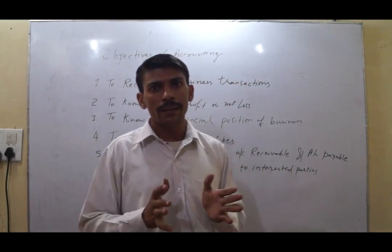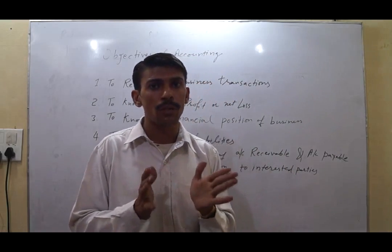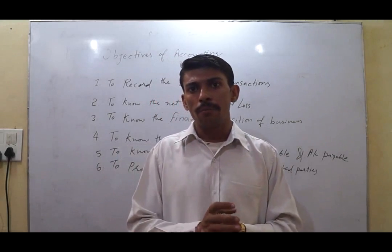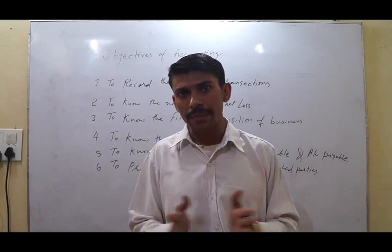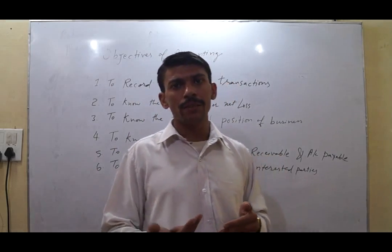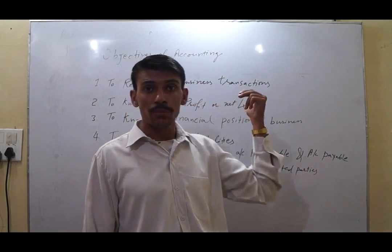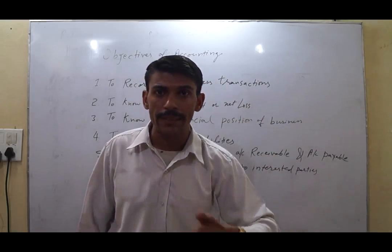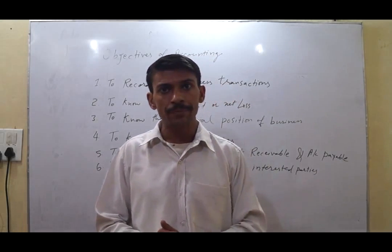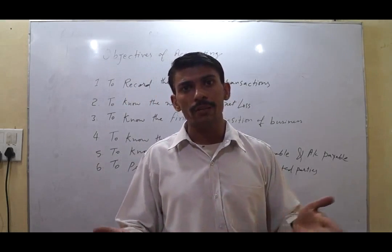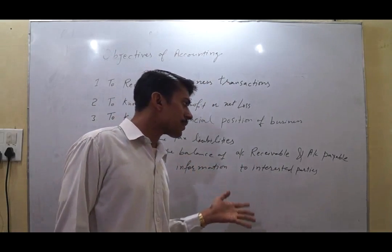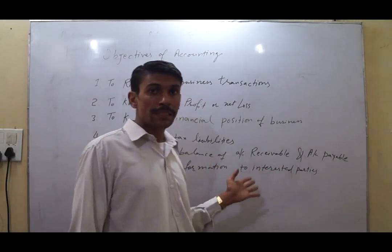The fourth objective is to calculate tax liabilities. In a country where your business is growing, you have to follow government regulations and laws. One of the most important is income tax — you must pay it. Tax liability can be calculated after calculating net profit, so if our target is to calculate net profit, our target is also to calculate net tax liability. Without accounting records, we cannot calculate tax liability.